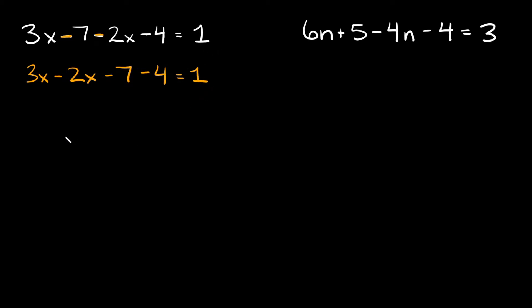Simplifying some stuff here 3x minus 2x is equal to 1x and then we have minus 7 minus 4 which is negative 11. That's equal to 1. And also 1x I could actually just write that as x so really we have x minus 11 is equal to 1.